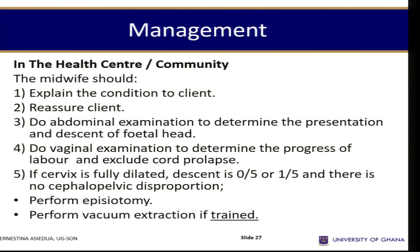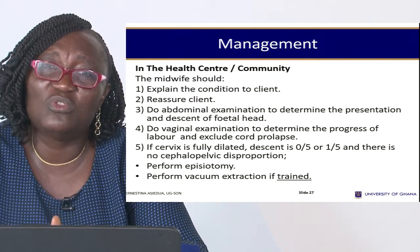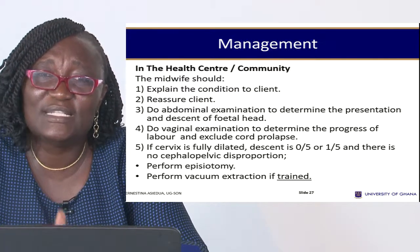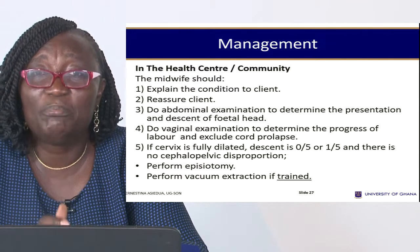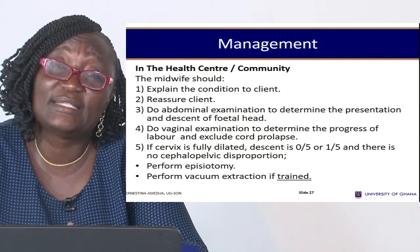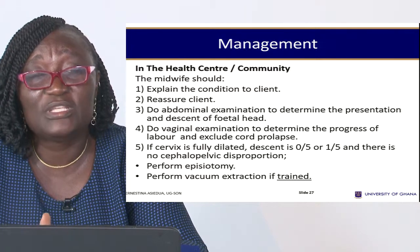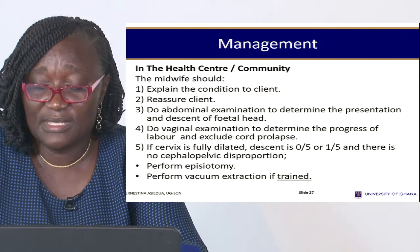If the cervix is fully dilated, check for descent. If descent is adequate — at zero or one-fifth — and there is no cephalopelvic disproportion, perform an episiotomy and vacuum extraction if trained, to hasten delivery. Perform a bilateral episiotomy and apply the vacuum extractor to bring out the baby immediately.